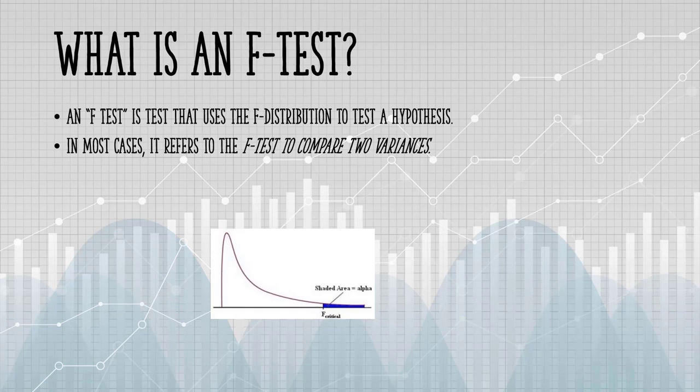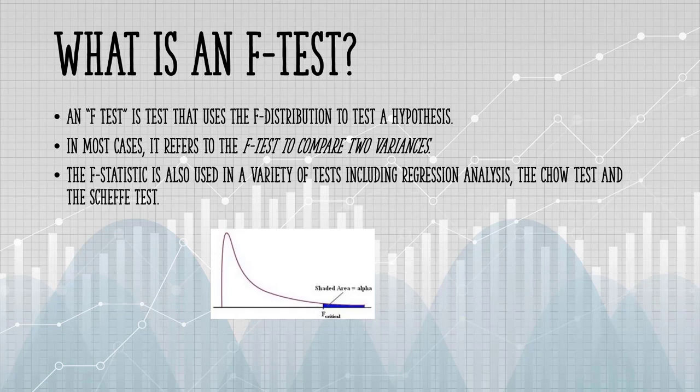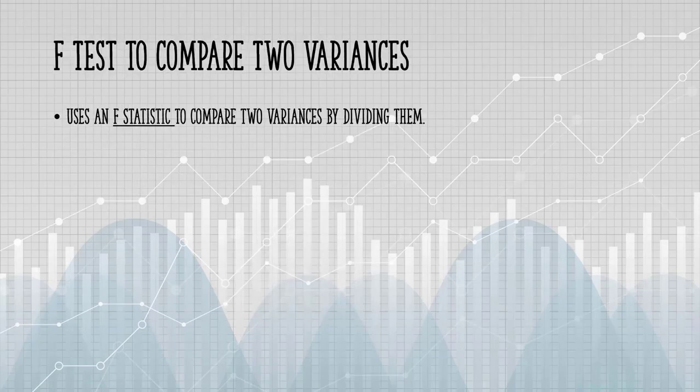However, the F-statistic is used in a variety of tests, including regression, the Chow test, and the Scheffé test, a post hoc ANOVA test. An F-test uses an F-statistic to compare two variances by dividing them.